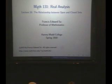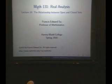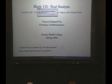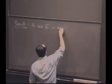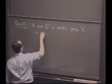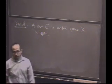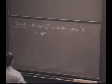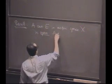Welcome back to Real Analysis. If you recall from last time, we were developing some of the notions involved in the topology of the real line. In particular, we defined open and closed sets, and we want to talk a bit about the relationship today. So let's just recall what it means for a set to be open. A set E in a metric space X is open if every point is an interior point.